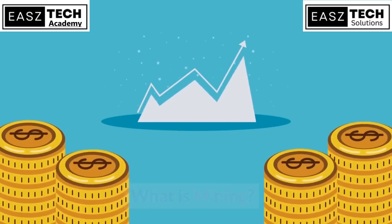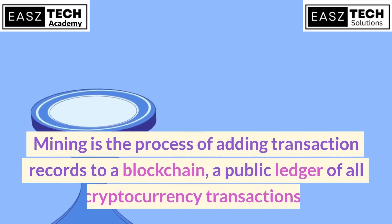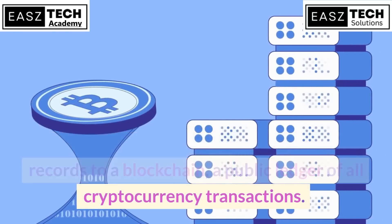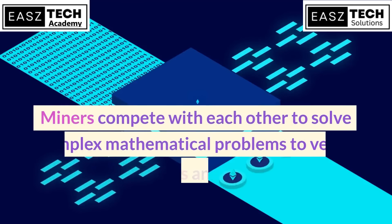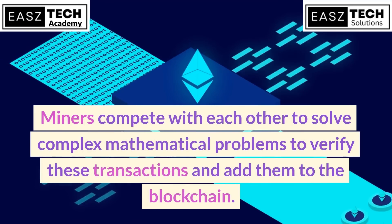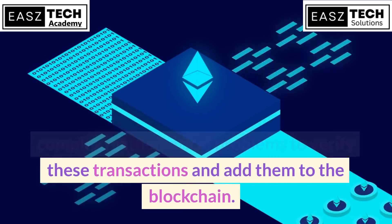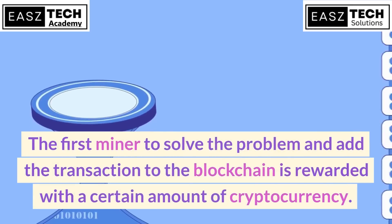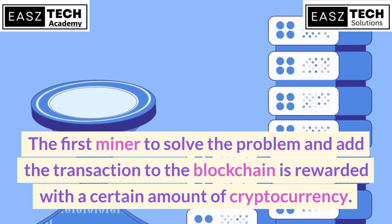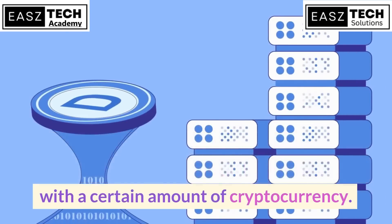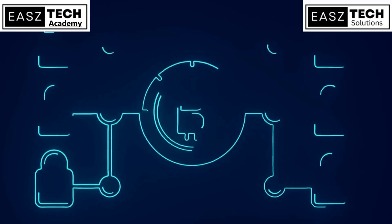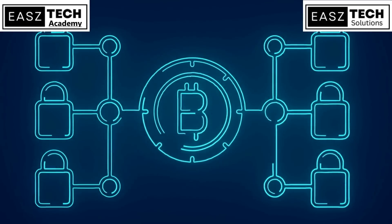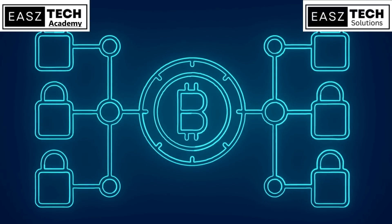What is mining? Mining is the process of adding transaction records to a blockchain — a public ledger of all cryptocurrency transactions. Miners compete with each other to solve complex mathematical problems to verify these transactions and add them to the blockchain. The first miner to solve the problem and add the transaction to the blockchain is rewarded with a certain amount of cryptocurrency.